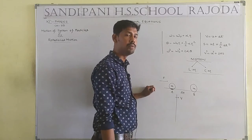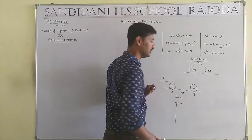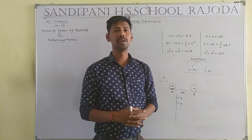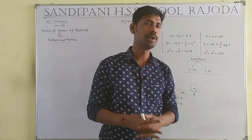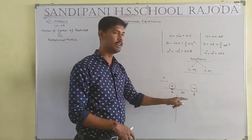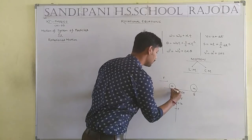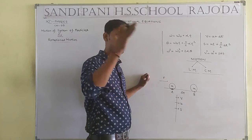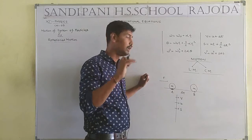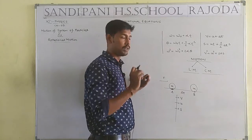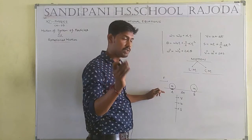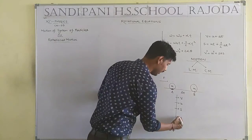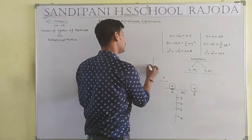In linear motion, we use these quantities: v means final velocity, u means initial velocity. At position A, velocity is defined as u, and at position B, velocity is defined as v. S represents displacement — distance is a scalar quantity while displacement is a vector quantity. Distance means total path length, and displacement means the direct path between two points. Here, a means acceleration.